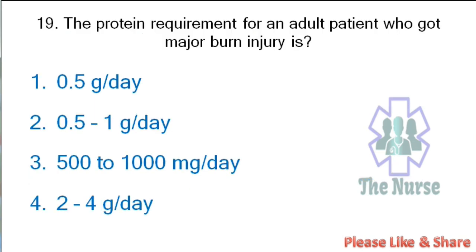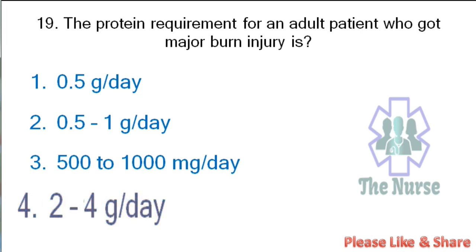Next question: The protein requirement for an adult patient who has a major burn injury is — 0.5 gram per day; 0.5–1 gram per day; 500–1000 mg per day; 2–4 grams per day. Correct answer: 2–4 grams per day.